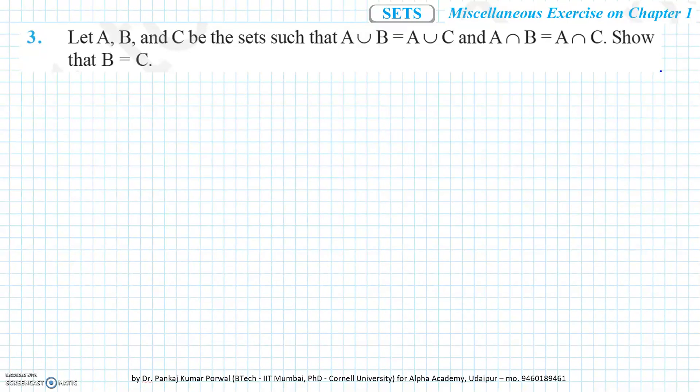In this question, we are given three sets: set A, set B, and set C. We are also given that A union B equals A union C, and A intersection B equals A intersection C, and we have to show that sets B and C are equal.